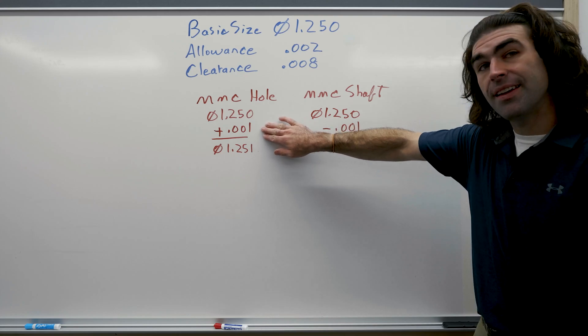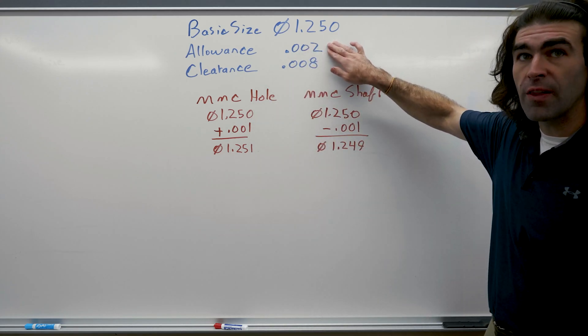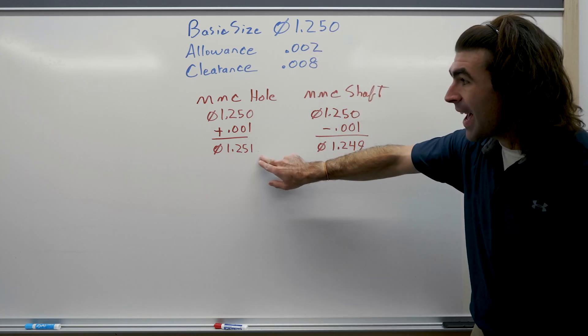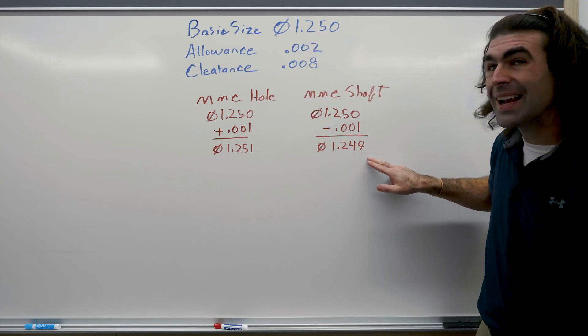Now we're going to add half of our allowance. So remember it's called split tolerance, so we split this in half. We add it to here, we subtract it from the shaft.